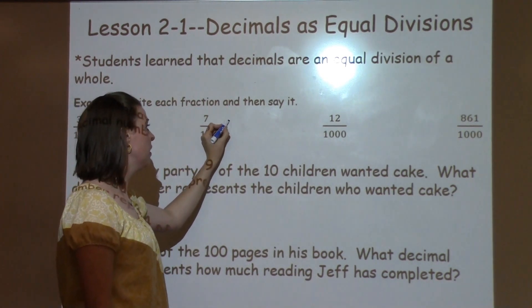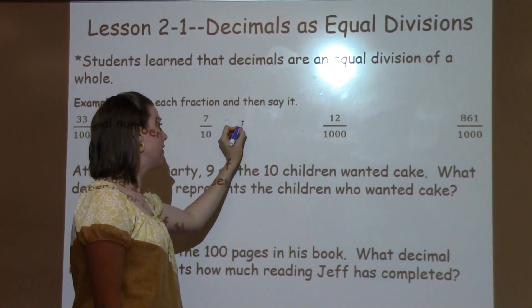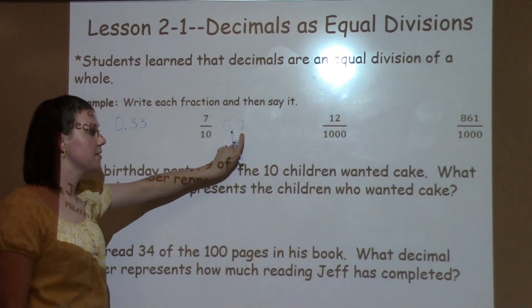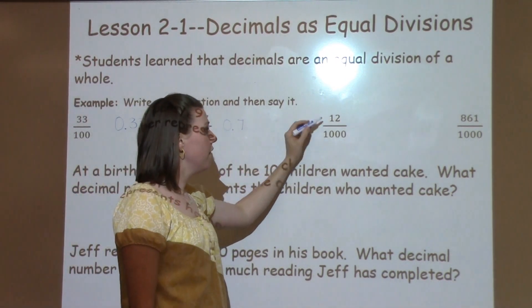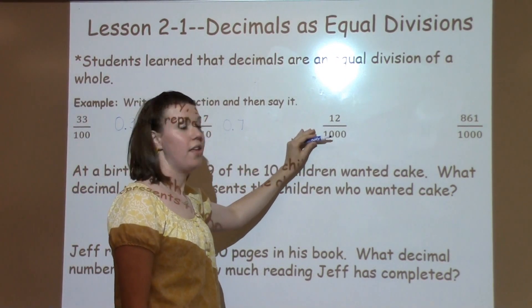I'm going to start with 0 and 7 tenths in the tenth spot. I have 12 out of a thousand, or 12 thousandths.